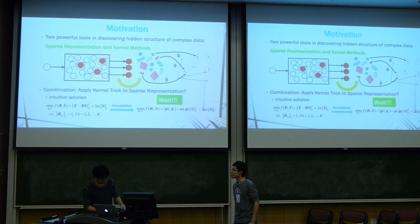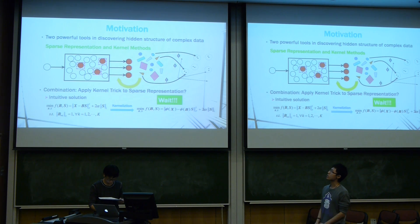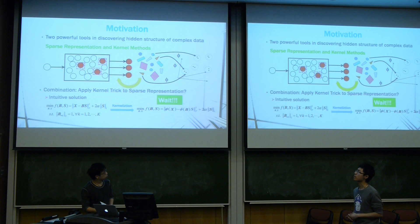We all know that sparse representation and kernel methods are two powerful tools in discovering hidden structures of complex data. They have something in common: they try to enlarge or increase the available information pools, where sparse representation tries to increase the portal elements while kernel methods solve the problem in higher dimensional space. So a natural idea is to try to combine these two and see what happens.